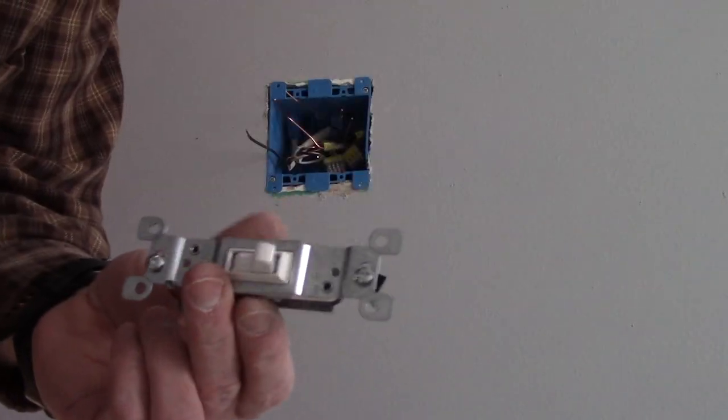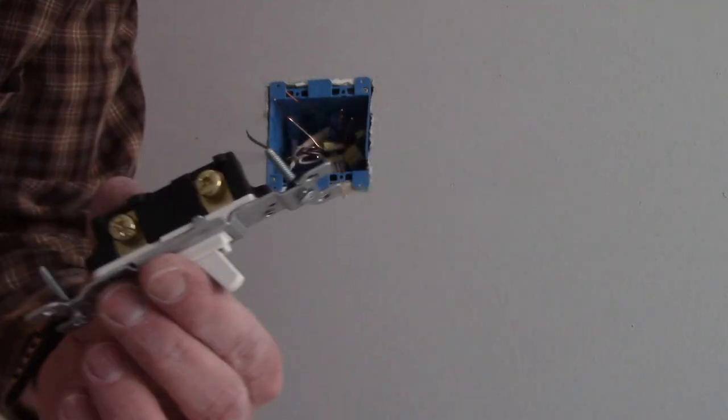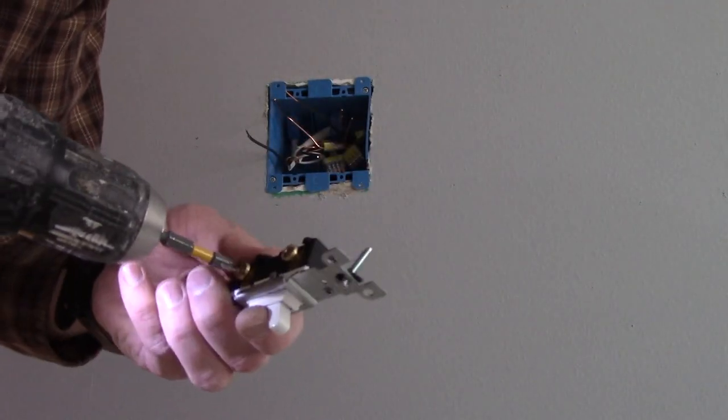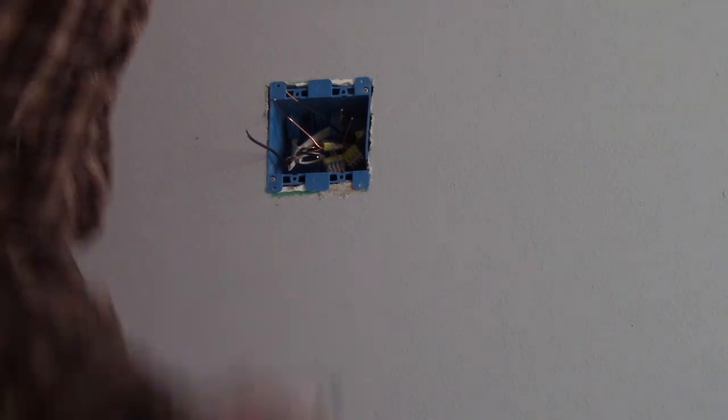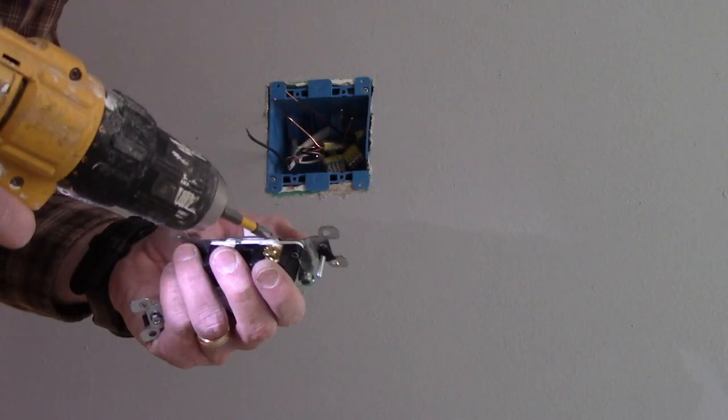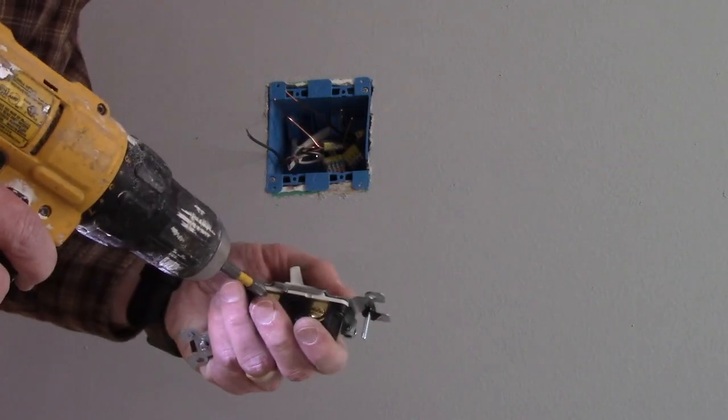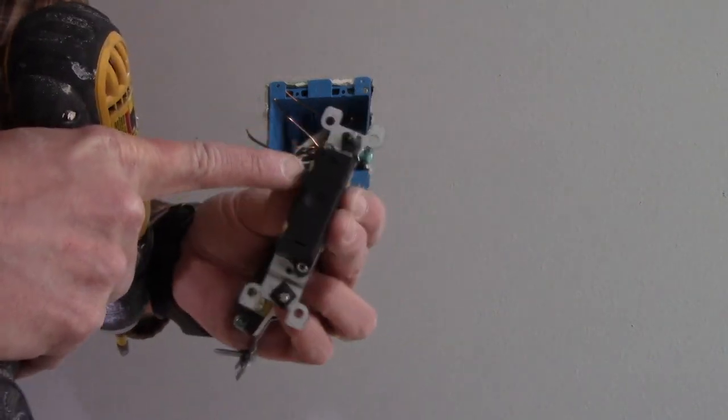So in this case, on this switch, you can either bend the wires and connect to the screws. But in this case, with 14-gauge cable, you can tell it's 14-gauge. And the modern conventional wiring, because it has a white sheath on it. I'm going to use the click-connect terminals on the back. And they're just push-in connections.